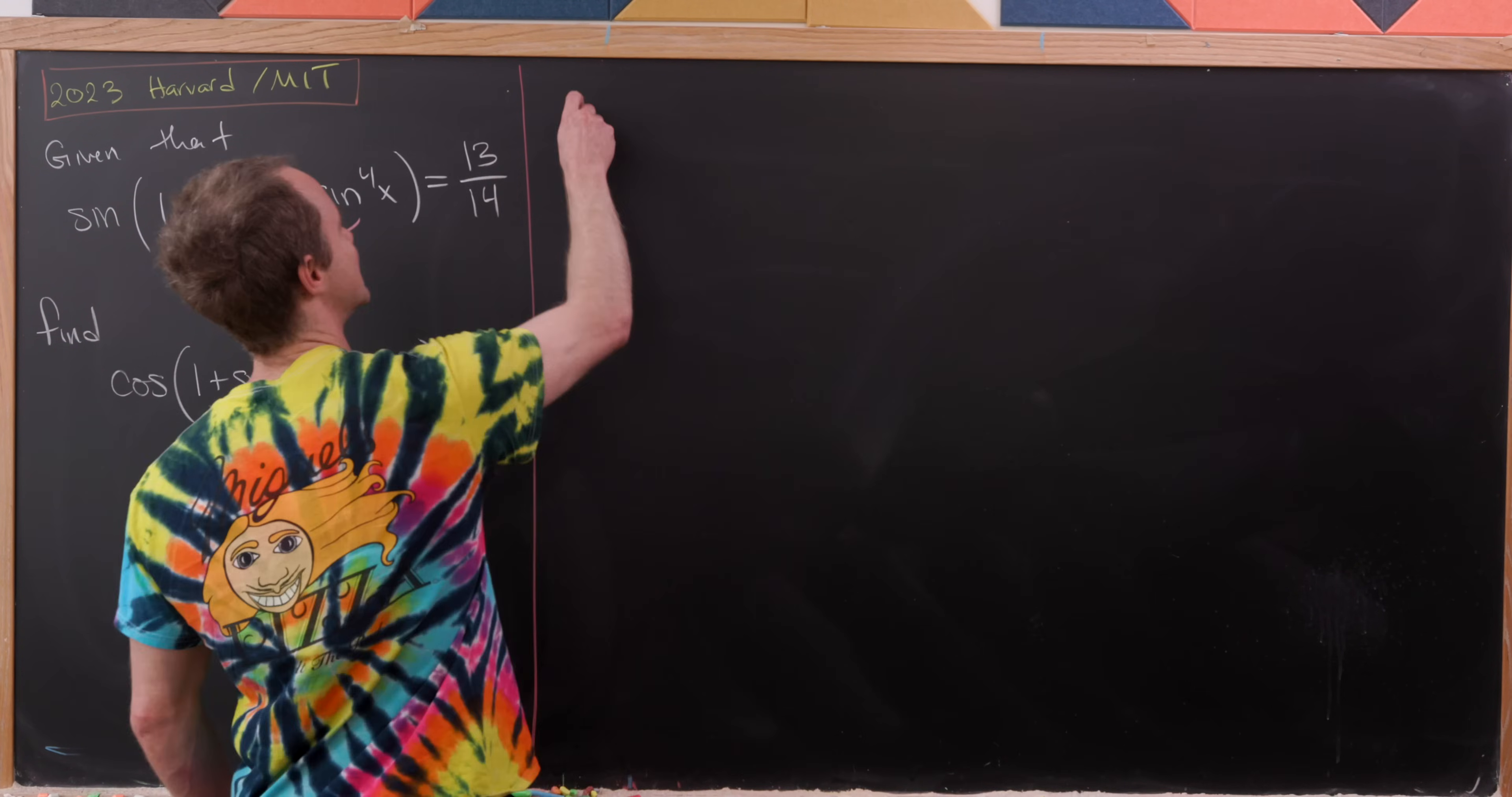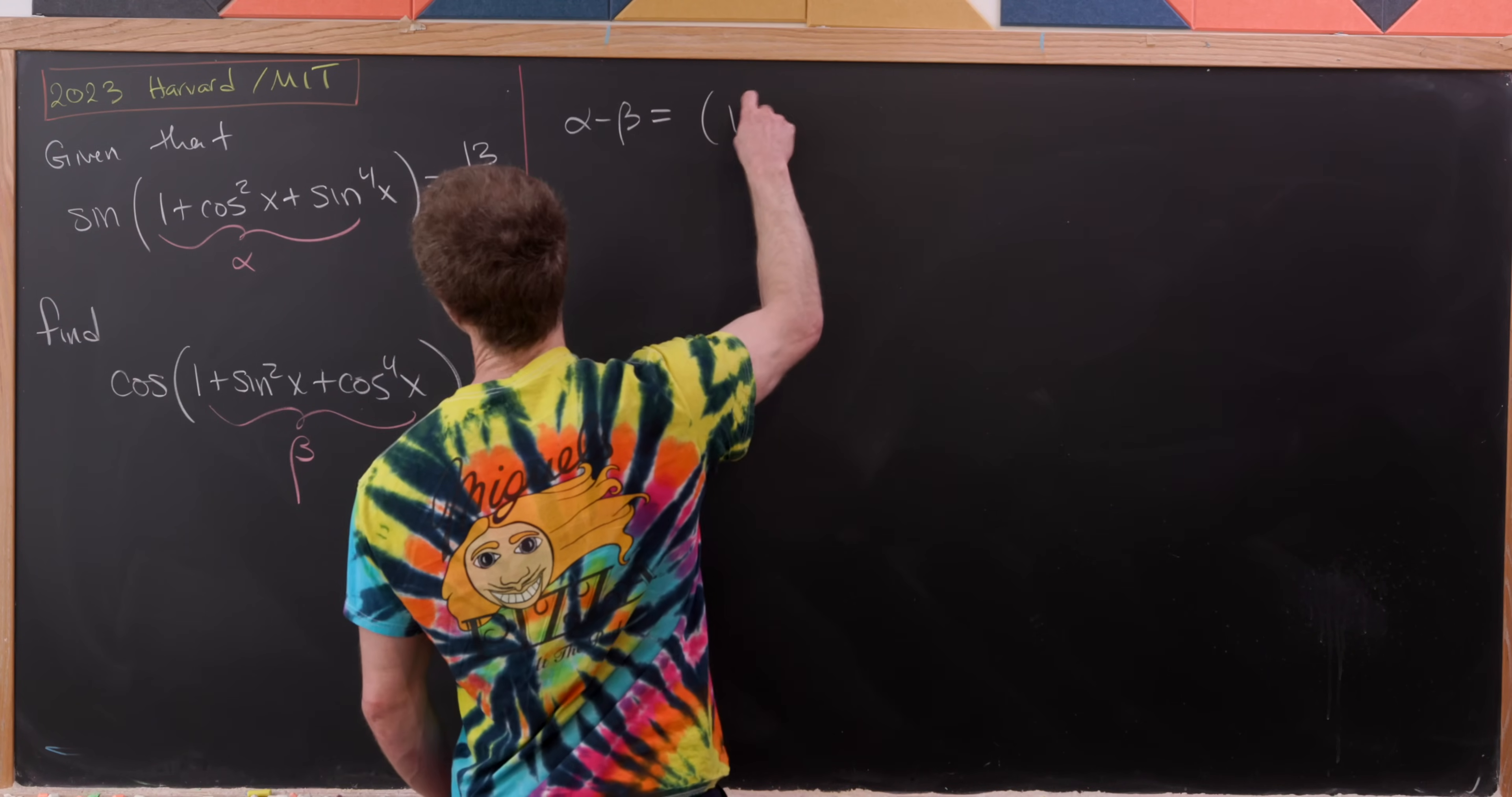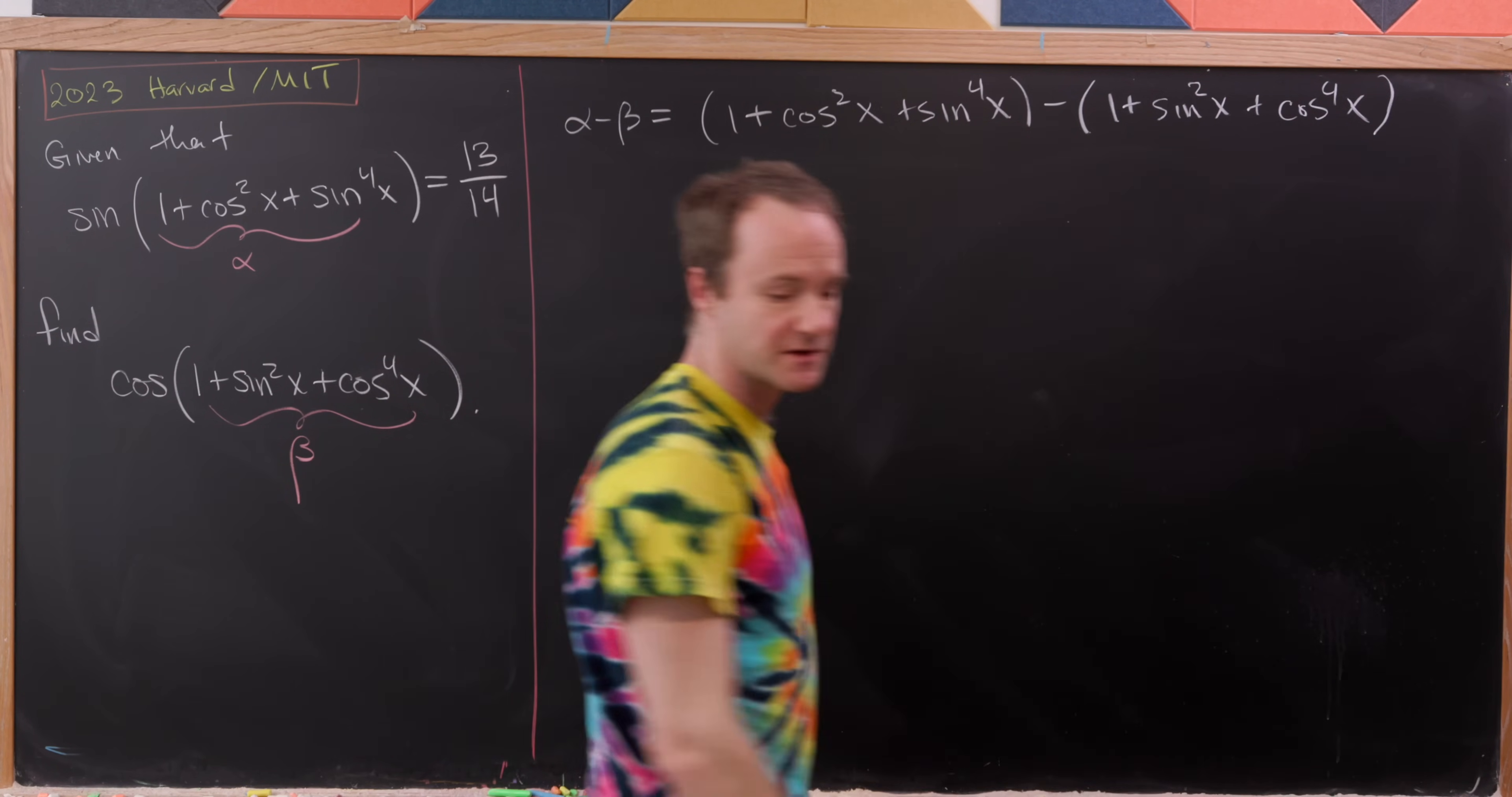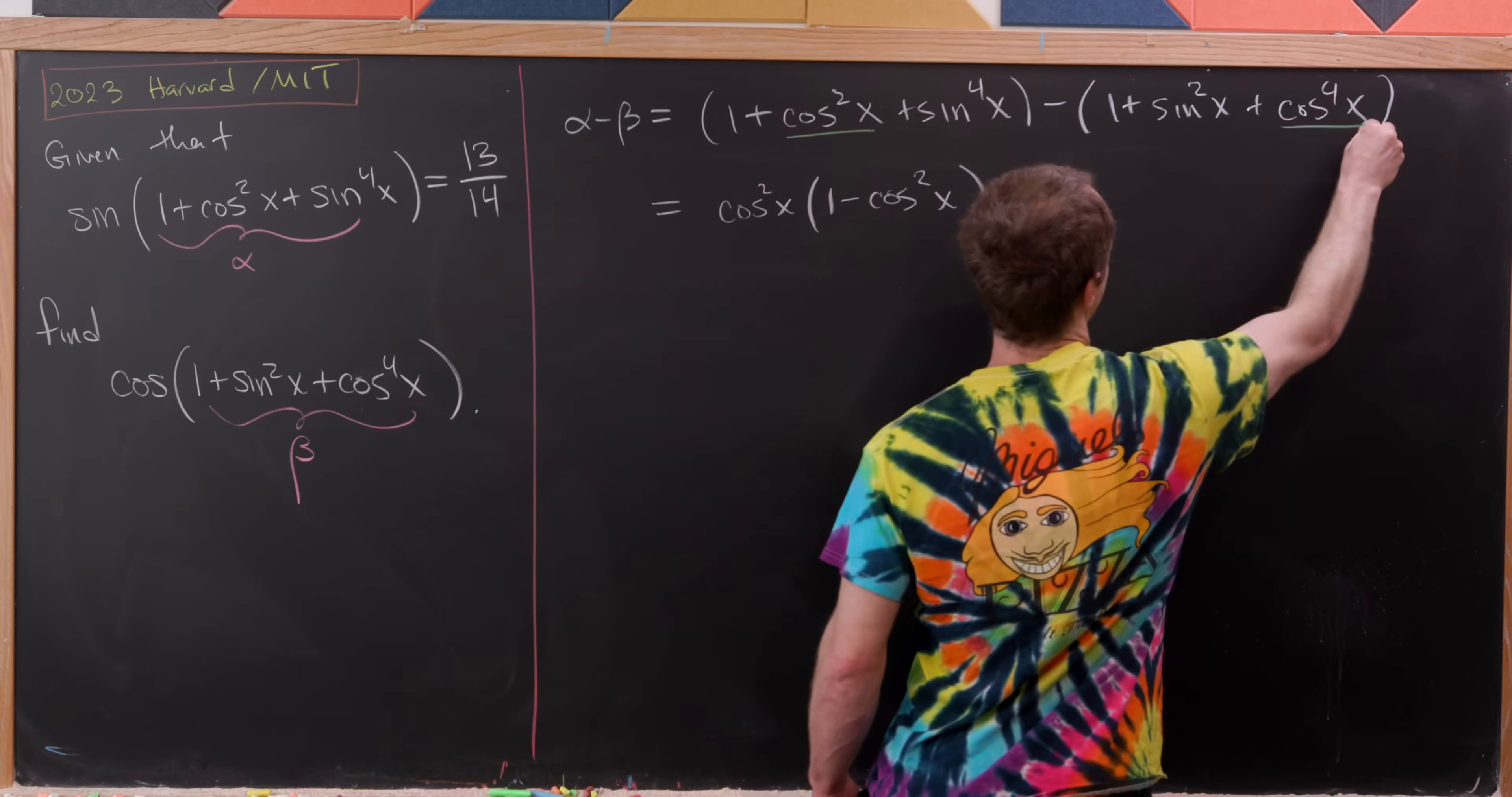Let's first look at the difference α - β. We could perhaps use a difference formula for one of the trig functions, or perhaps this is even simpler. So let's write this down. α - β = (1 + cos²x + sin⁴x) - (1 + sin²x + cos⁴x). Obviously some stuff will cancel here. The 1 will cancel, and we'll be left with cos²x - cos⁴x. But I'm going to factor a cos²x out and I'll be left with cos²x(1 - cos²x). Let's color code that—that's what's happening with these green terms.